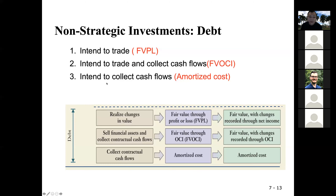If you have no intention to trade and you will hold it until maturity — if the debt is 30 years long, you'll hold it for 30 years to collect your interest — then in that case, you put it into the amortized cost category.